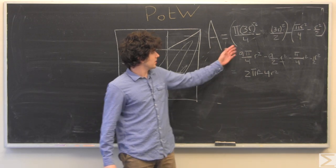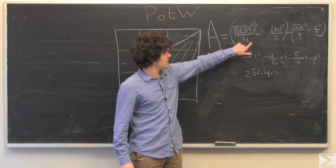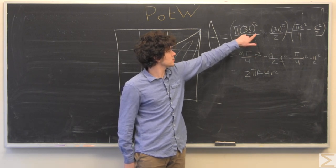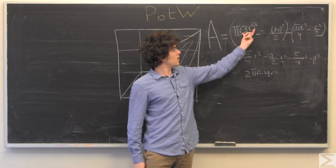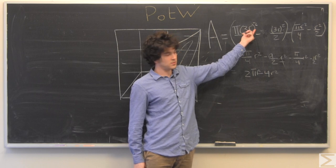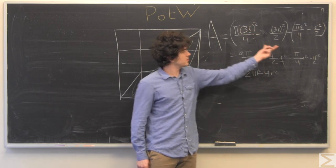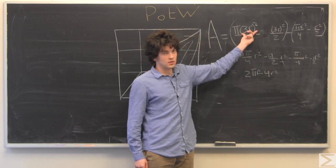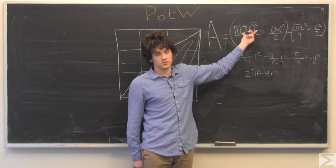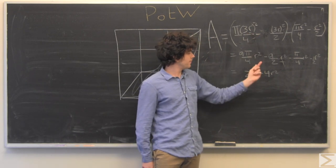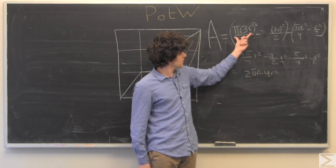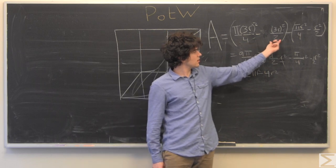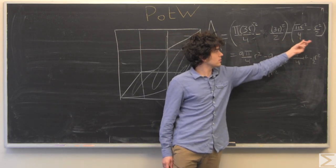Once we do that, we have this is one fourth the area of a circle which is pi r squared. And we have this r here since the big piece radius is three times the little radius. And so we have this quarter circle minus a triangle minus a quarter circle minus a triangle.